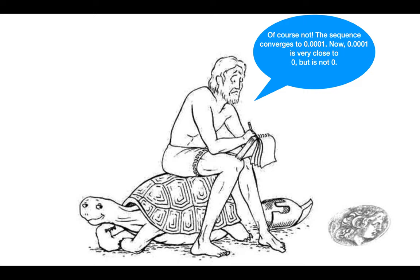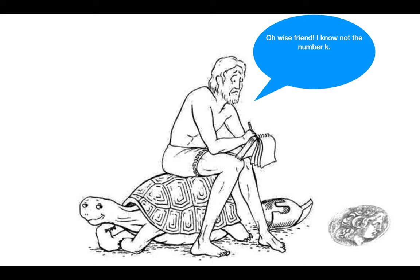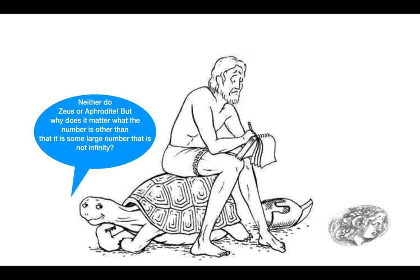What if I take k to be the number of sand particles from Athens to Sparta and consider the constant sequence 1/k, 1/k, 1/k and so on? Oh, wise friend, I know not the number k. Neither do Zeus or Aphrodite. But why does it matter what the number is, other than that it is some large number that is not infinity?